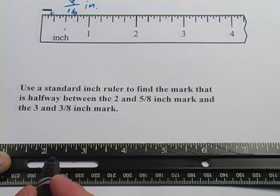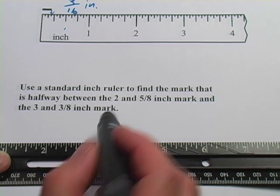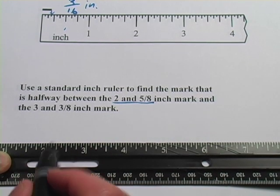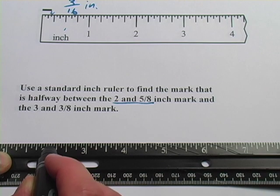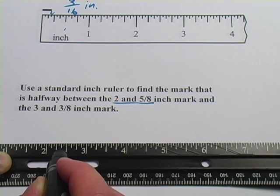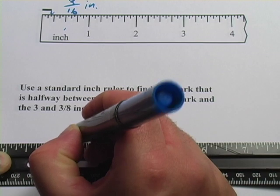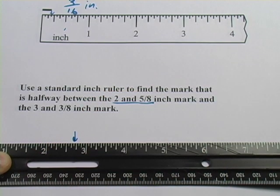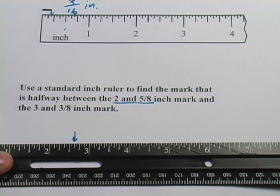because 1/8ths are a bigger chunk than 16ths. So if we're going to find 2 and 5/8 first, well, here's the 2, and I would count 1/8, 2/8, which is the same as 1/4, 3/8, 4/8, that's the same as 1/2, and 5/8 would be right there. Let me get that perfect. Okay, so there's 2 and 5/8.